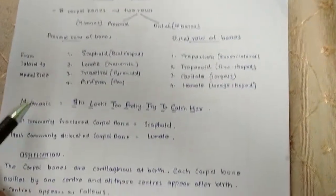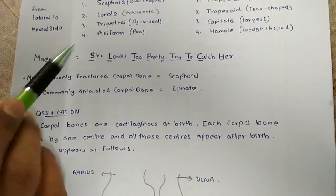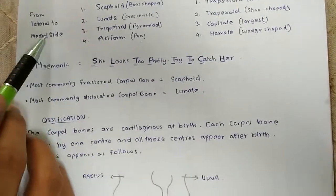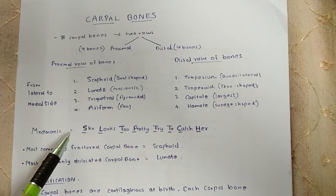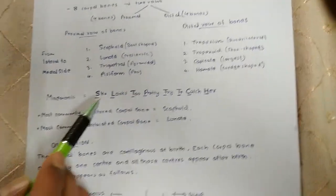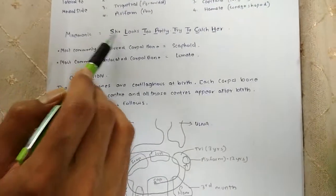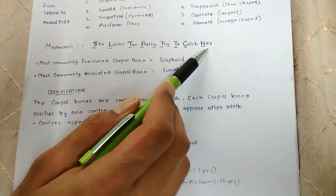Now the easy way to remember the mnemonic to remember the eight carpal bones are in order, that is first proximal from lateral to medial and then distal from again lateral to medial. She looks too pretty, try to catch her.